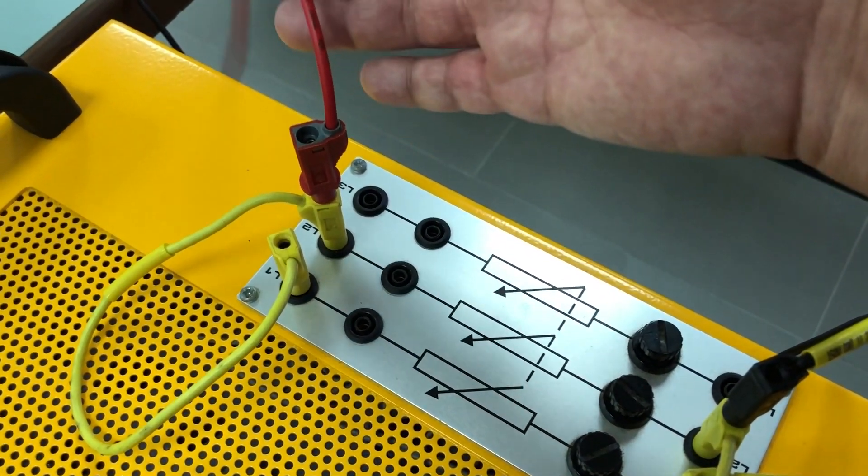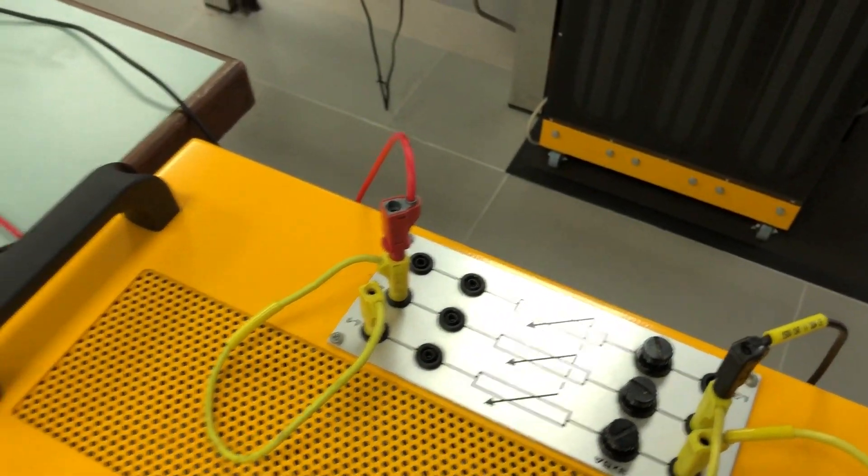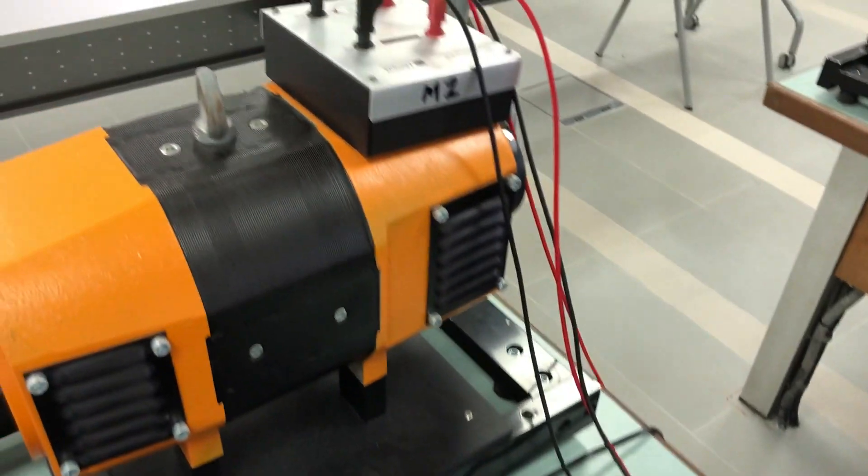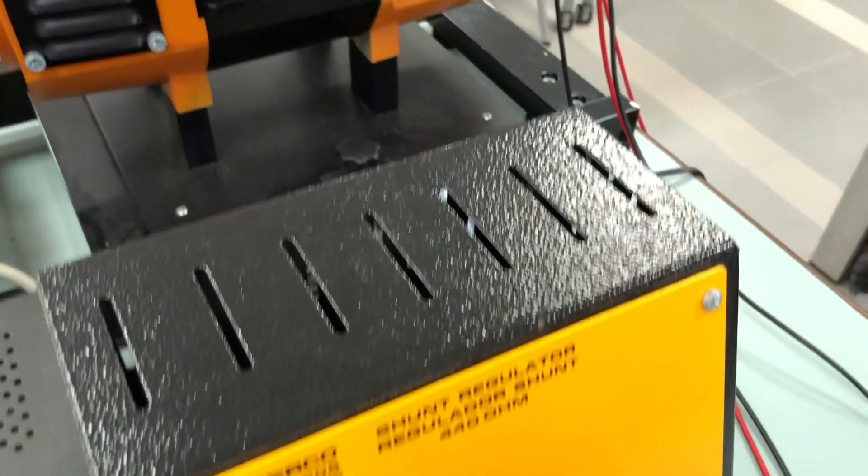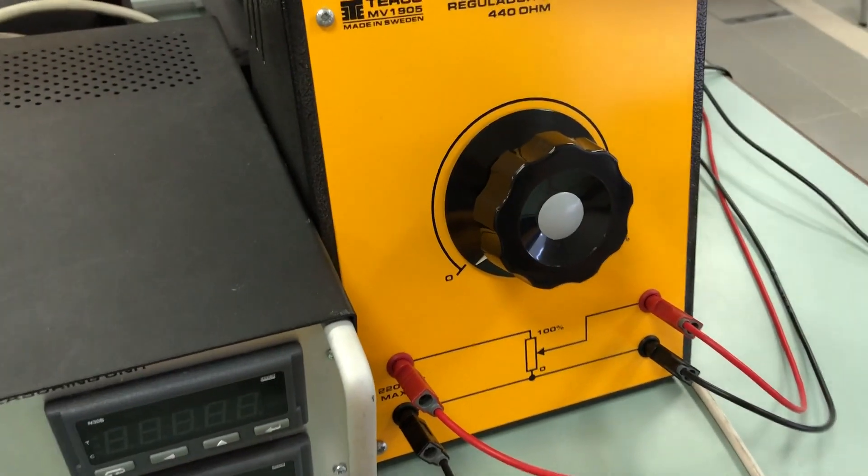With the two wires going to the armature circuit of the generator, A1 and A2. F1, F2 is connected to the field circuit, the rheostat. That's for the generator.